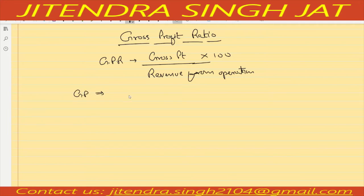To calculate gross profit when sales is given: Revenue from Operations minus Cost of Goods Sold. Sometimes a direct percentage is also given to calculate gross profit. Let's begin solving some numericals of gross profit ratio.